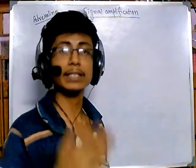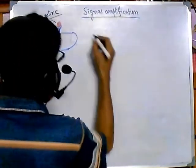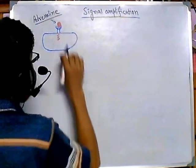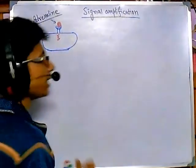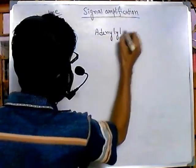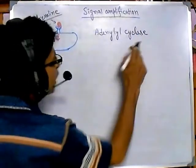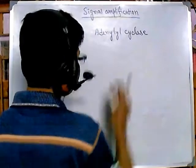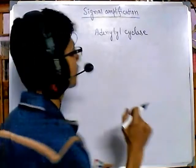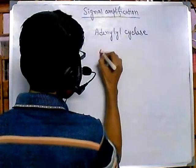When adrenaline is present, it is first going to activate adenylyl cyclase. This is the first chemical to be activated after attachment of the adrenaline hormone. So the first step is: adrenaline activates adenylyl cyclase.